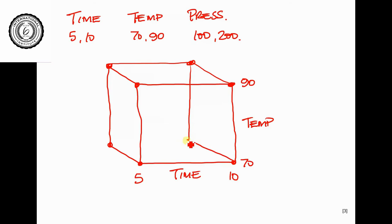So we've tested at those eight corners. Pressure is tested at 100 at the low and 200 at the high. That is a designed experiment — it is a mathematical pattern that gets the most amount of information from your tests. I've used time, temperature and pressure here, but you could put any variable in.